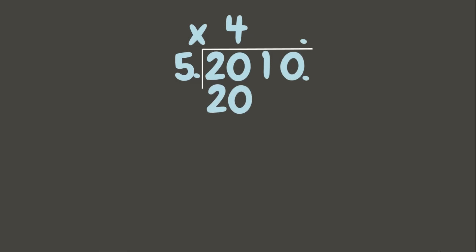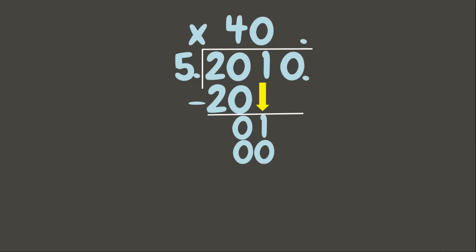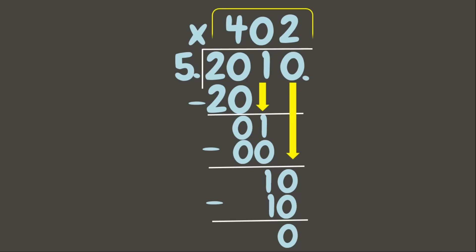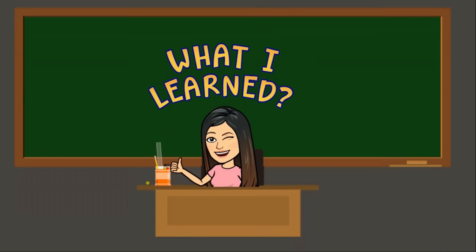Now it's dividing time: 2010 divided by 15. 20 divided by 15 is 1 — wait, let's divide: 20 divided by 5 is 4. 4 times 5 is 20. 20 minus 20 is 0. Bring down 1. 1 divided by 5 is 0. 0 times 5 is 0. 1 minus 0 is 1. Bring down 0. 10 divided by 5 is 2. 2 times 5 is 10. 10 minus 10 is 0. Since there is no more remainder, our final answer is 402.